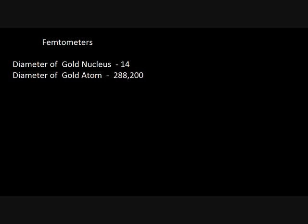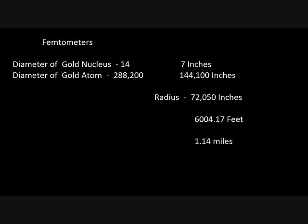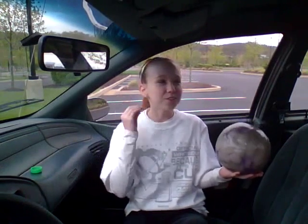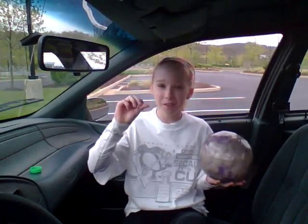To convert these measurements into something appropriate for the model, I divided everything by 2 and converted it to inches, feet, and miles. If the nucleus is 7 inches across, that means the electrons are about the size of a grain of salt.